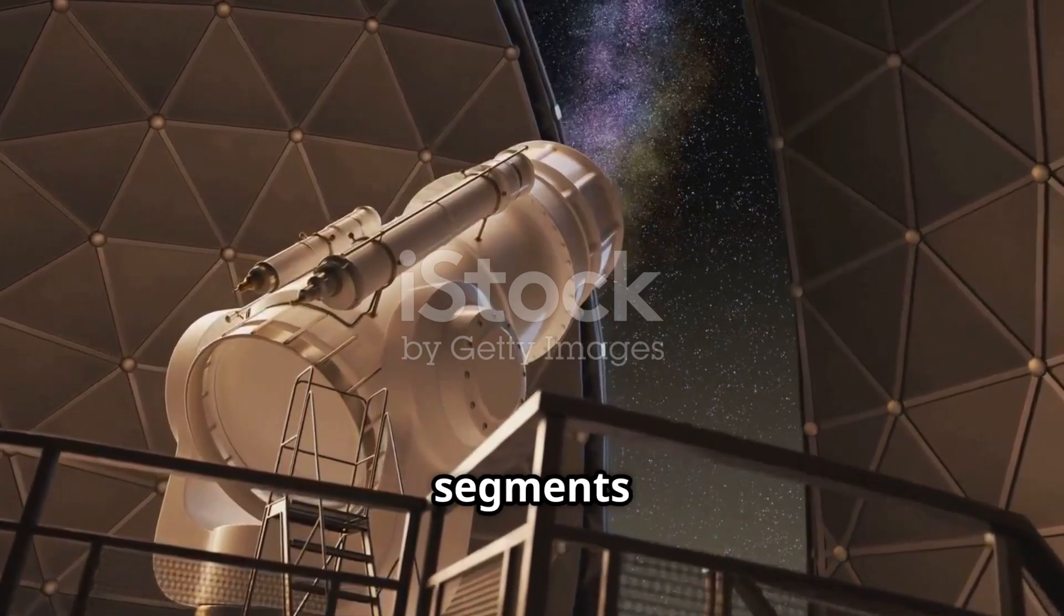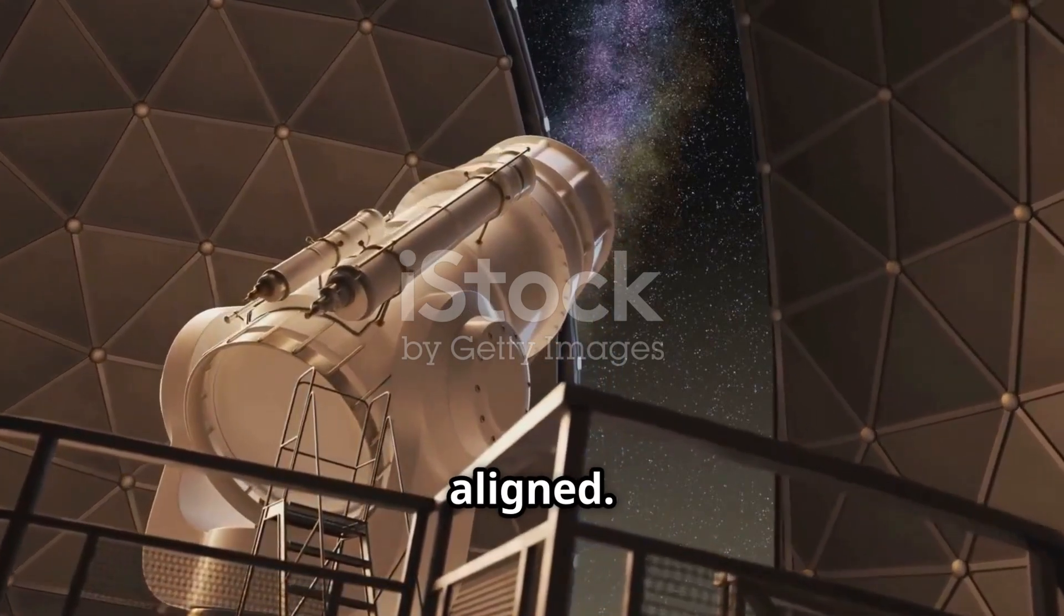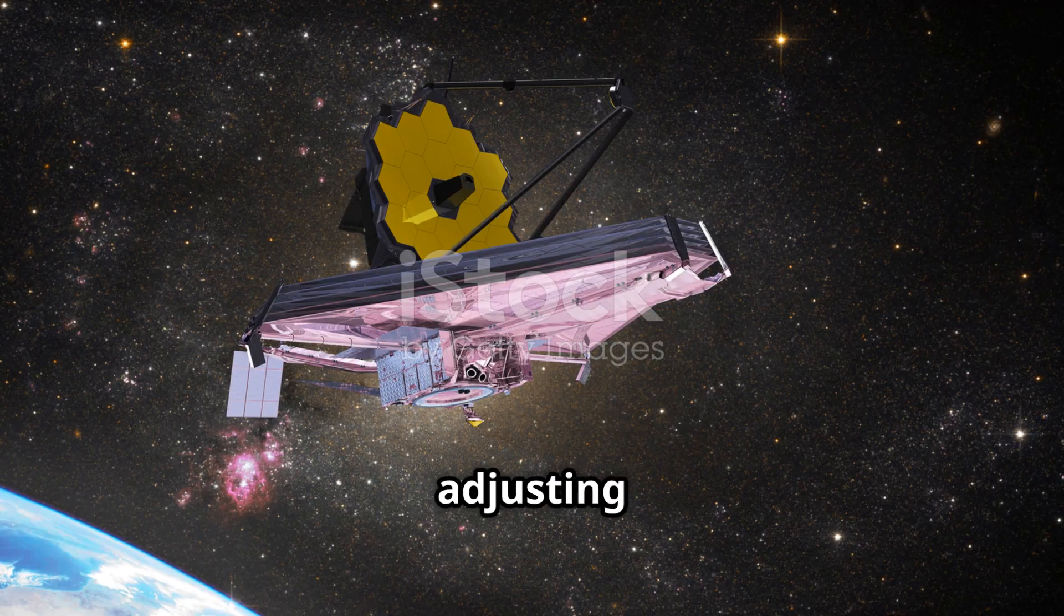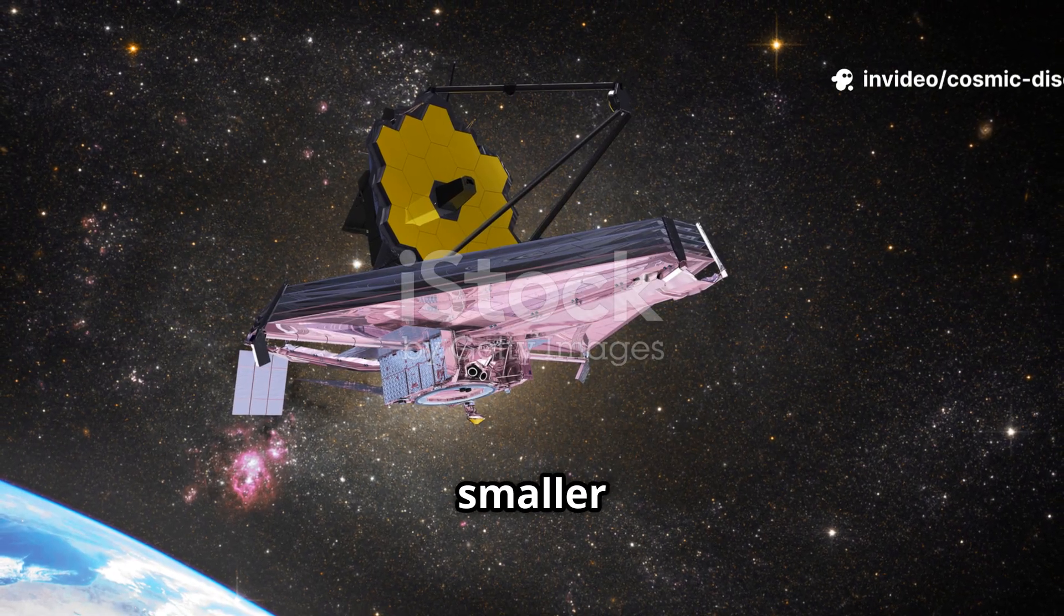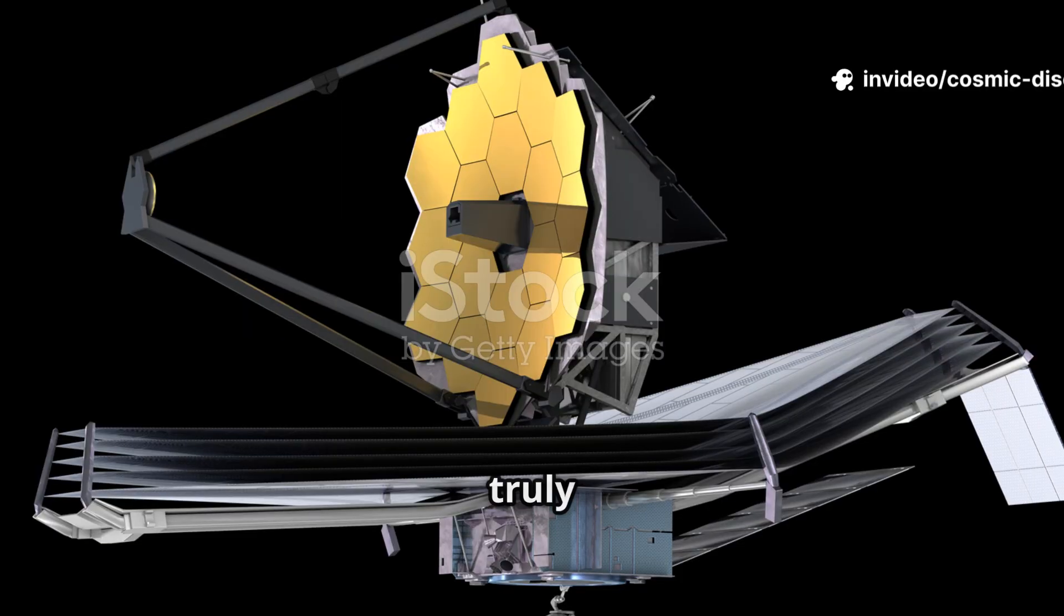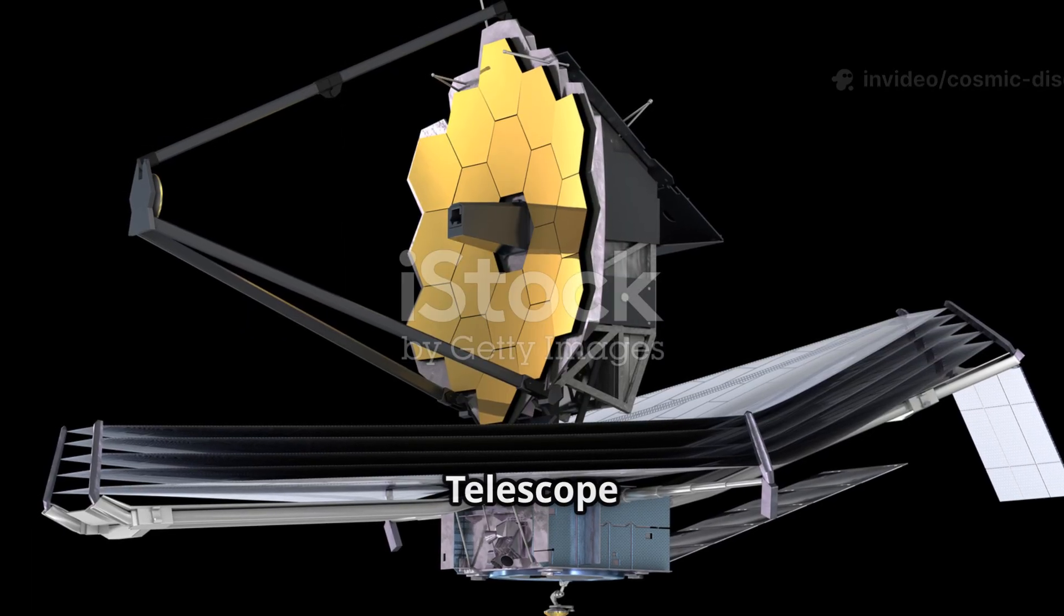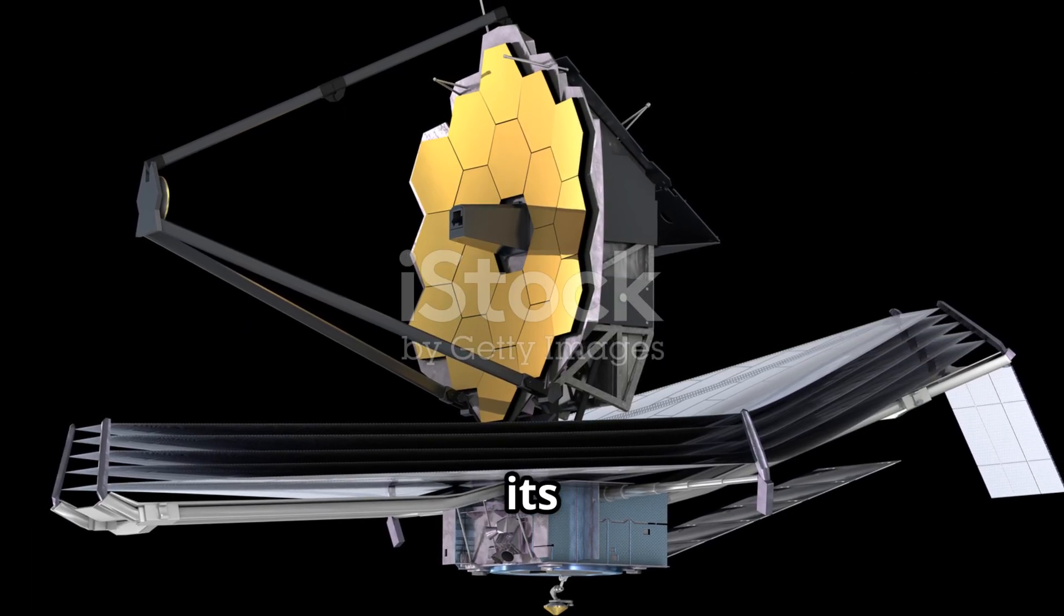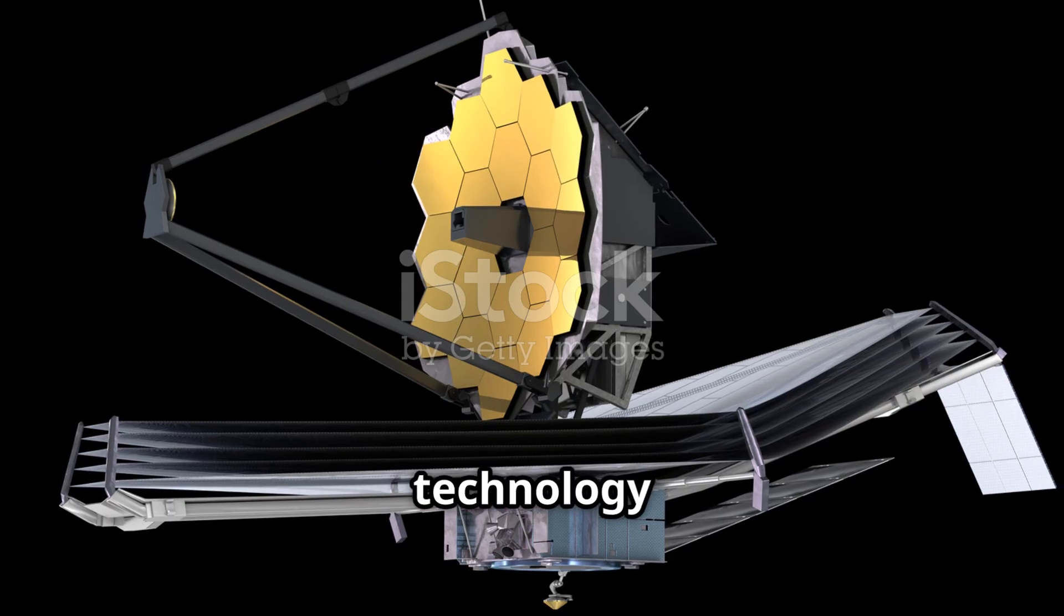Each of its 18 mirror segments had to be meticulously aligned. This process involved adjusting them by distances smaller than the width of a virus until they acted as one perfect, seamless mirror. What truly sets the James Webb Space Telescope apart is not just its size, but the incredible technology it carries.